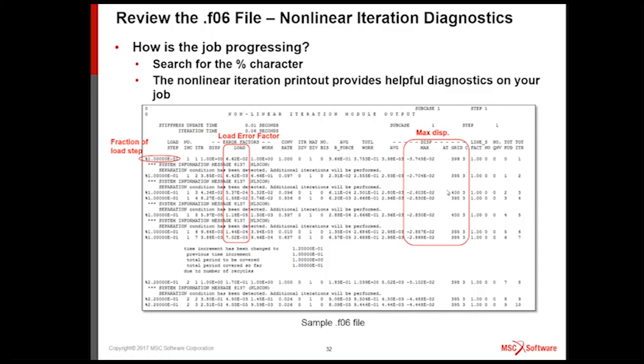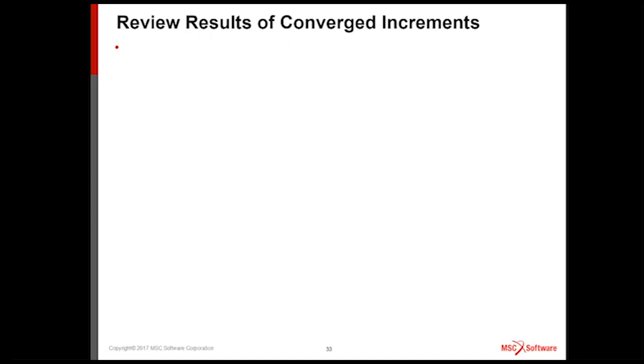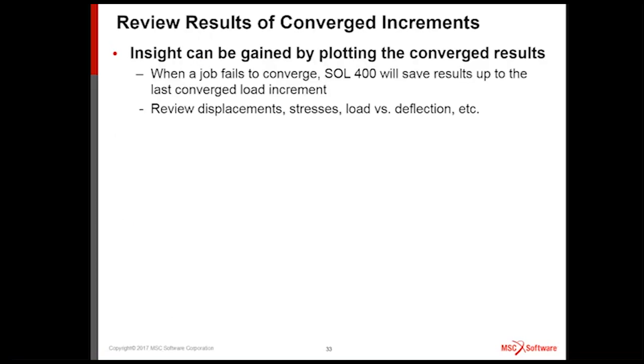Max displacement is another thing to watch. If the job is running away, this shows you more information than the STS file. The STS file shows you the largest number. It doesn't tell you what degree of freedom. This tells you in what node, at what grid point, what component, the degree of freedom, and the value. Again, gives you some idea if the job is running away from you. Contact separations, again, something to look for.